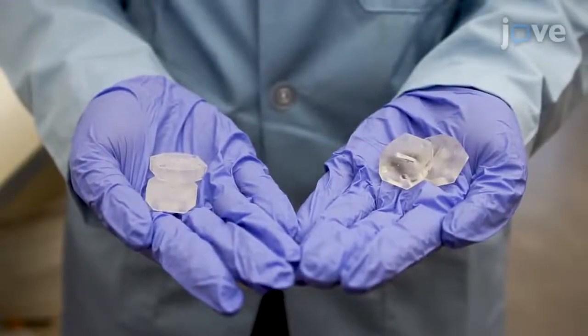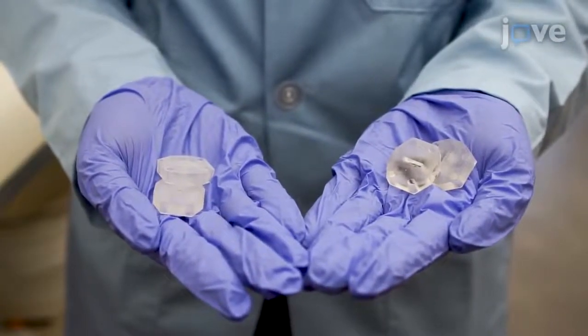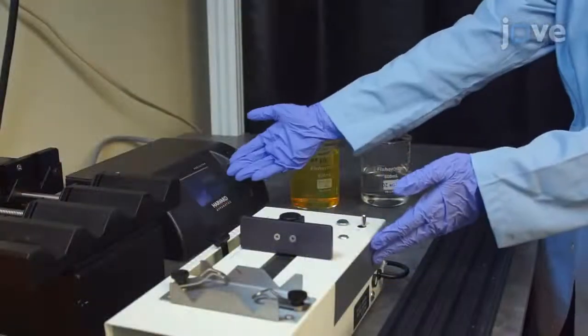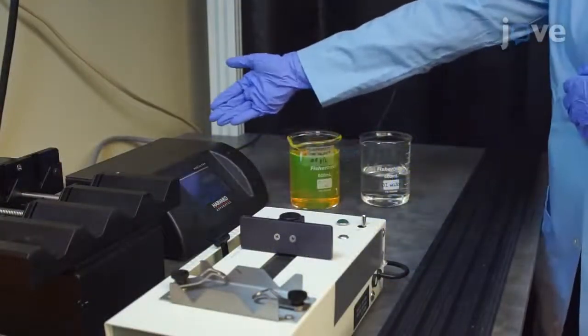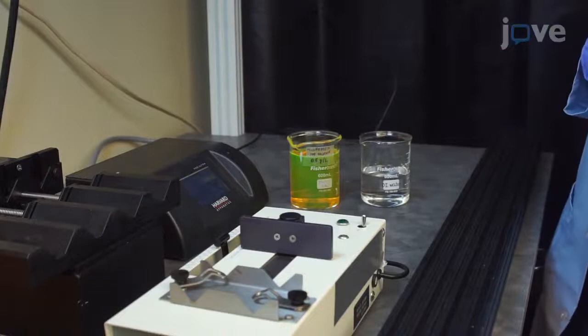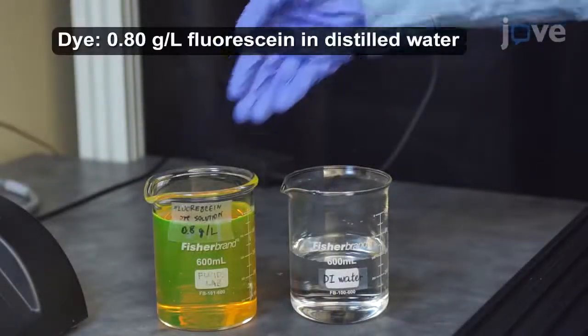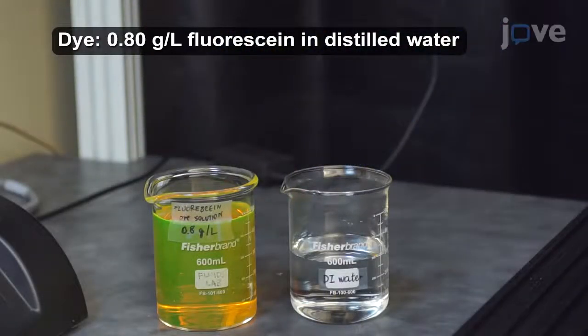Each pipe has two 3D printed plates to support it in the setup. The experiment requires two syringe pumps, one of them programmable. For fluids, have a fluorescein dye solution ready and a source of distilled water.